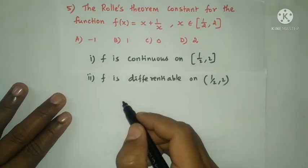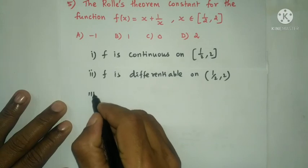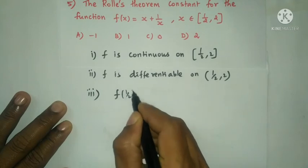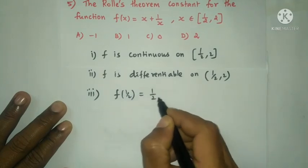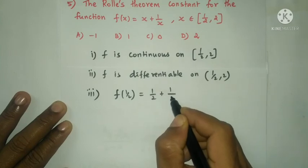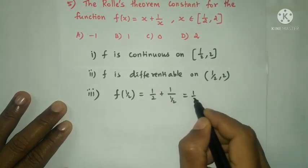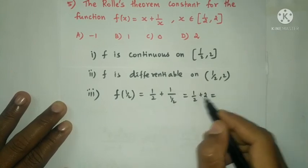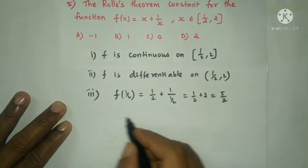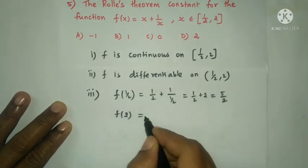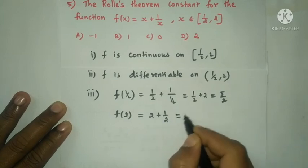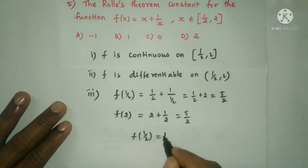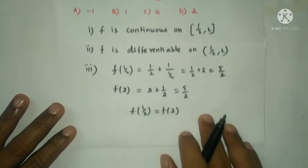Checking f(a) = f(b): f(1/2) = 1/2 + 1/(1/2) = 1/2 + 2 = 5/2. And f(2) = 2 + 1/2 = 5/2. So f(1/2) = f(2) = 5/2. The third condition is satisfied. Therefore, Rolle's theorem is applicable.